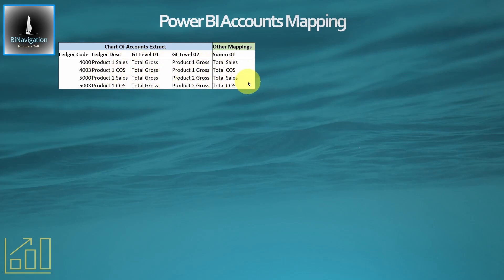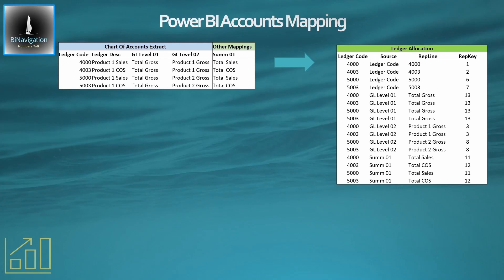Power BI unfortunately can't read across very well from a structured table, so we need to convert that into a ledger allocation table. Looking here, some of these are mapped one-for-one — so ledger code 4000 goes into report line 4000, all very straightforward — but as we start to make additions, the ledger codes start to repeat.